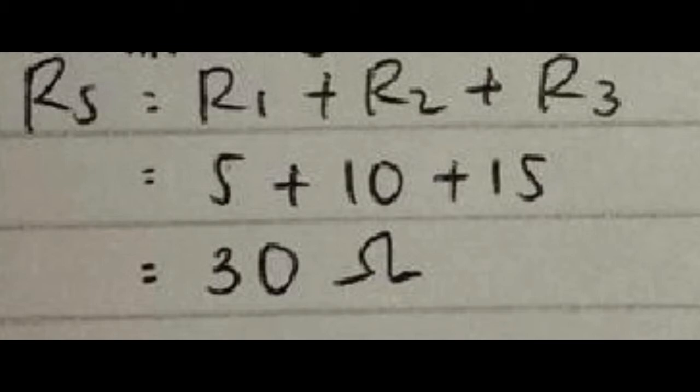Jawaban: R total sama dengan R1 plus R2 plus R3, sama dengan 5 plus 10 plus 15 sama dengan 30 ohm.